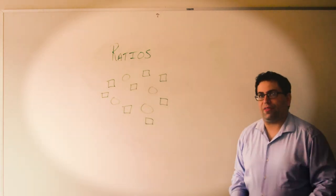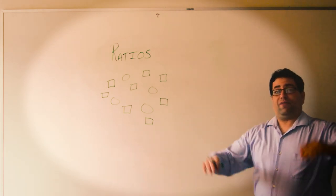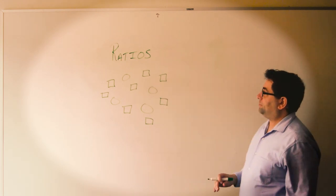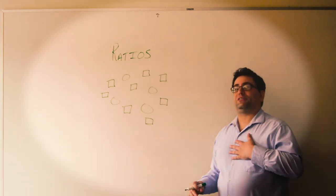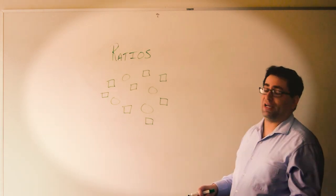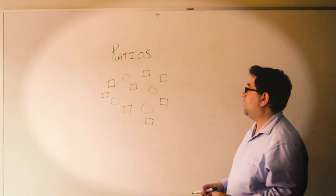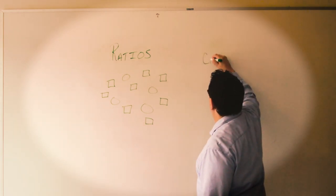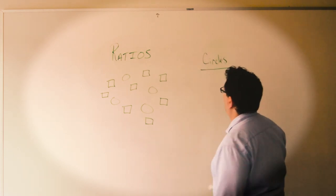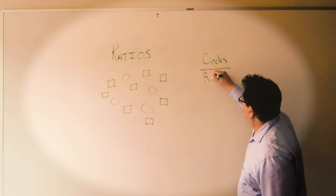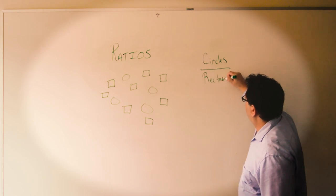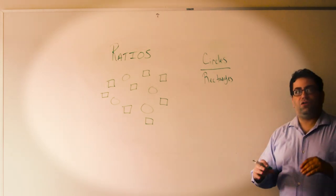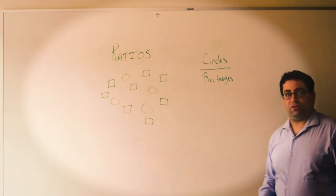If we're using the fraction method for ratios, we have a top and a bottom. I have two things: circles and rectangles. Once you decide to put circles on top or rectangles on top — your choice — you have to stick to it. So if I'm going to do circles in the top over rectangles, I have set the order in which my ratio will be read.